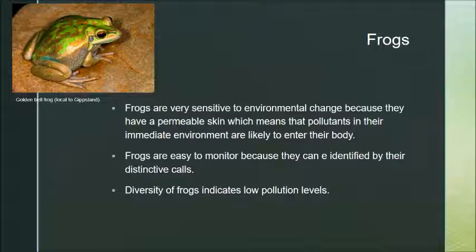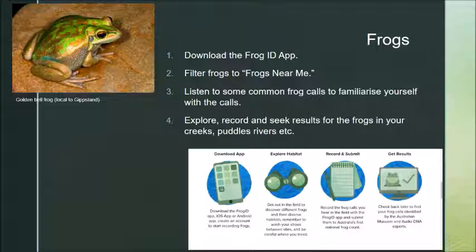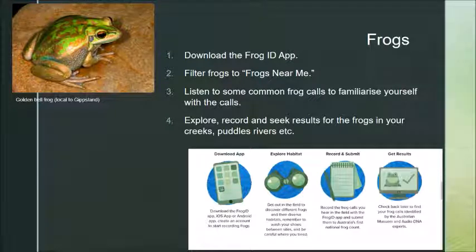You're looking for the number of different frog species. If you only have common species like the eastern common froglet or the striped marsh frog, you're probably looking at a quite polluted system. There's an app called Frog ID — a Museum Australia app — which you should download. Filter the list to frogs near you and start exploring frogs in your local area, including lesser-known species like the golden bell frog. Record frog calls after all the rain we've had, and experts can identify what species they are, or you might even identify them yourself.